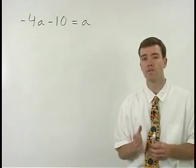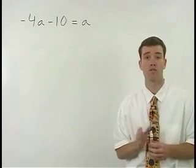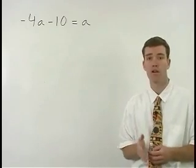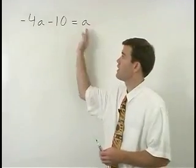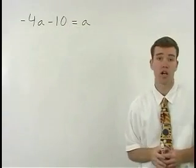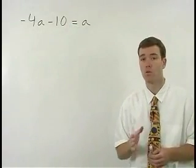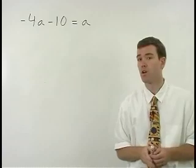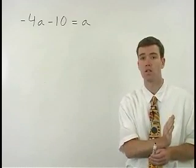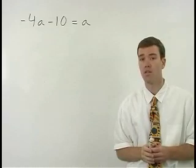In this problem, we have the same situation that we had in the first example. Our variable, in this case a, appears on both sides of the equation. So our goal will be the same, to put our variables together on one side of the equation and leave our number on the other.